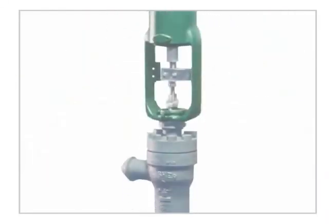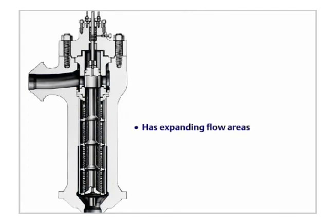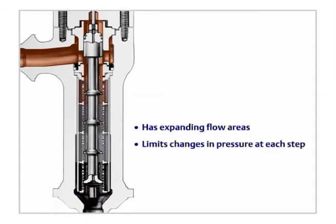In addition, the Cavitrol IV valve trim has expanding flow areas that decrease pressure as the fluid flows through, limits changes in pressure at each step to prevent fluid from reaching the vaporization point, and prevents leakage.